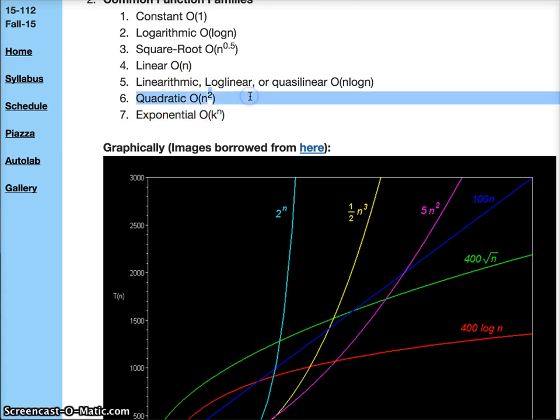Quadratic is N squared, and then we have things like cubic and quartic, which is N cubed and to the fourth. Those are all worse than the ones before them, and then the worst possible function family that we could possibly have is exponential.